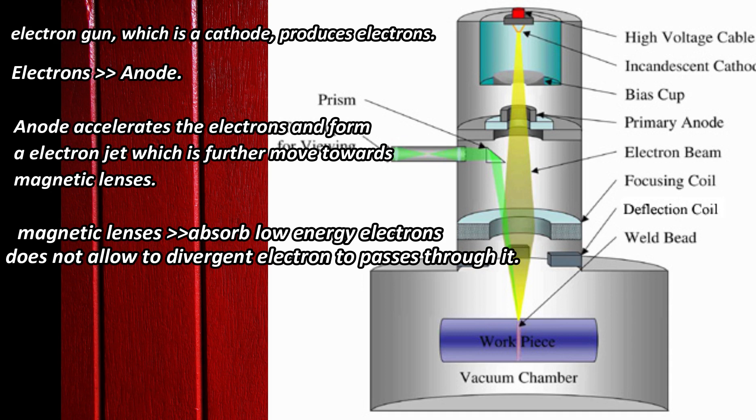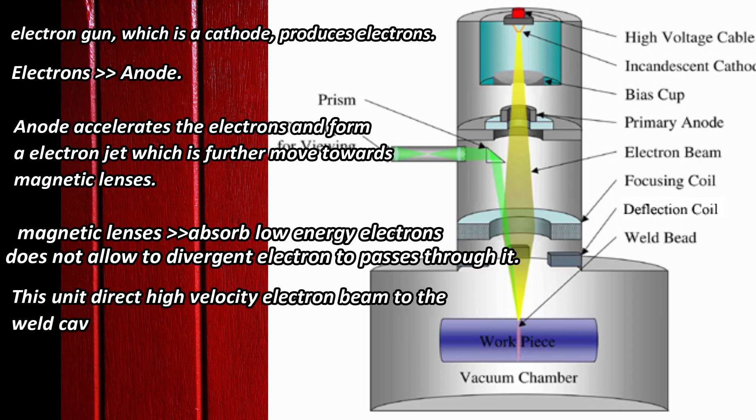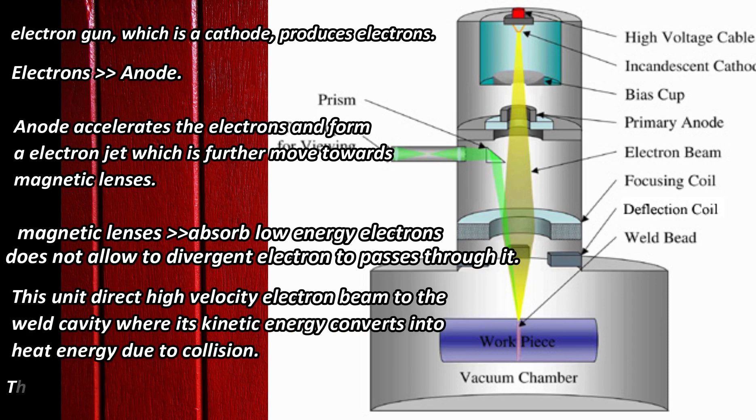Now this electron beam passes through the electromagnetic lens and deflecting coil, which are used to focus and deflect the electron beam at the required spot. This unit directs high velocity electron beam to the weld cavity where its kinetic energy converts into heat energy due to collision. This heat energy is used to create weld by fusion. This whole welding process is carried out in a vacuum chamber, otherwise the electrons collide with air particles in the way and lose their energy.